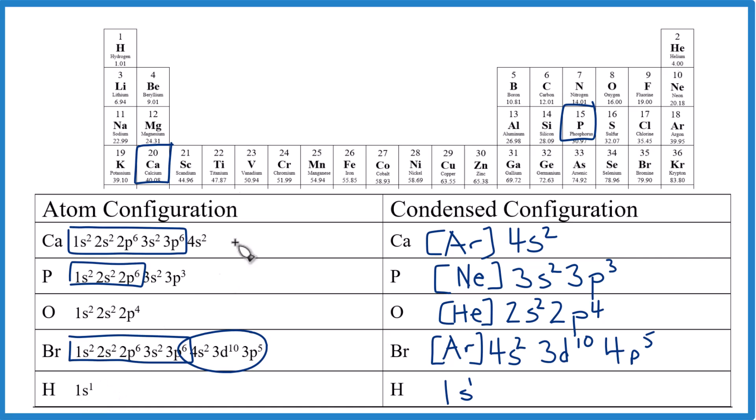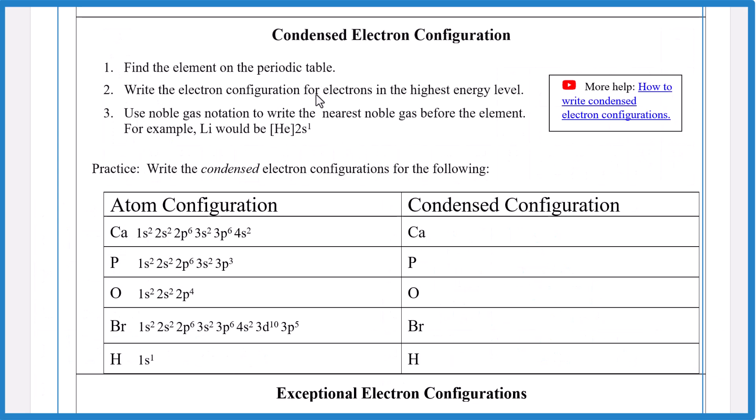Finally, hydrogen. Hydrogen is the first element. We can't go back anymore. So there's no condensed notation. Or it's already condensed. However you want to think about it. That's how you do those condensed configurations. If you need more help with condensed electron configurations, sometimes called abbreviated electron configurations, that's right here.